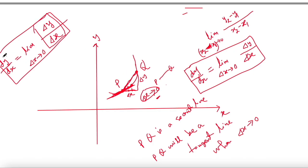So dy/dx at point P is the slope of the tangent line at P.